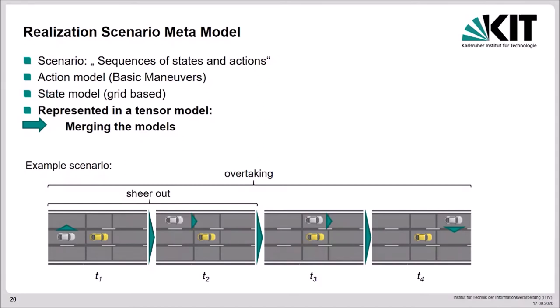So why is that an advantage? A scenario can contain a lot of sub-scenarios. For example, a scenario overtaking contains the sub-scenario shear out and additional sub-scenarios. But independent of the actual time length of an overtaking scenario, which can vary, the representation in the tensor always has the same length. This allows to identify same or similar scenarios at a later stage.